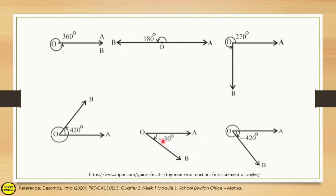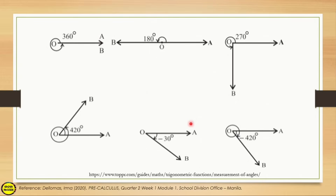For clockwise rotation, the angle is negative. For example, negative 30 degrees is an example of clockwise rotation. Negative 420 degrees is also clockwise — starting from the initial side, it rotates one full turn (360°) plus an additional 60 degrees, giving 420 degrees total. So to summarize: counterclockwise rotation gives a positive angle, and clockwise rotation gives a negative angle.